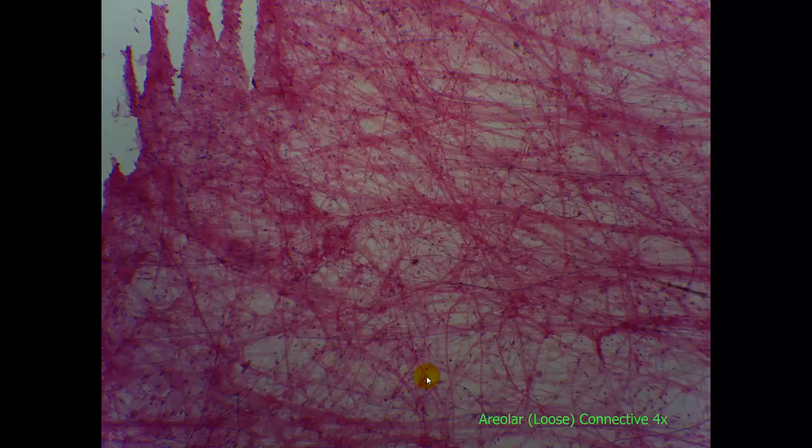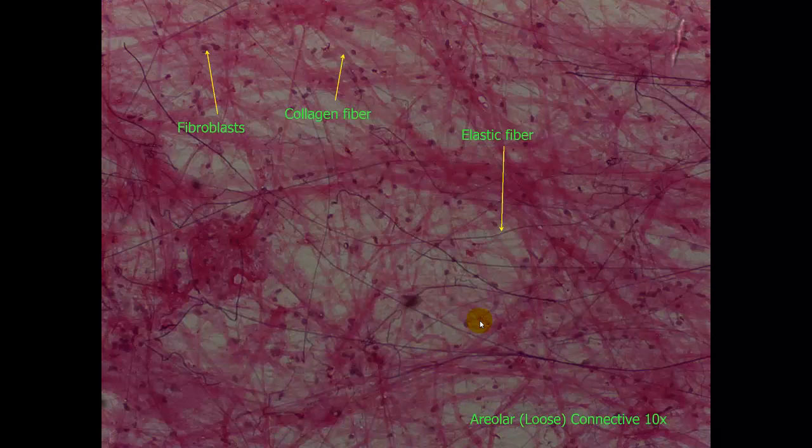Here is areolar or loose connective. This is a very wide open matrix as you can tell. There is a lot of space in there. This is a 4x magnification. This is generally easily distinguishable from the other connective tissues. It has its own very unique look. Let's take a closer look.